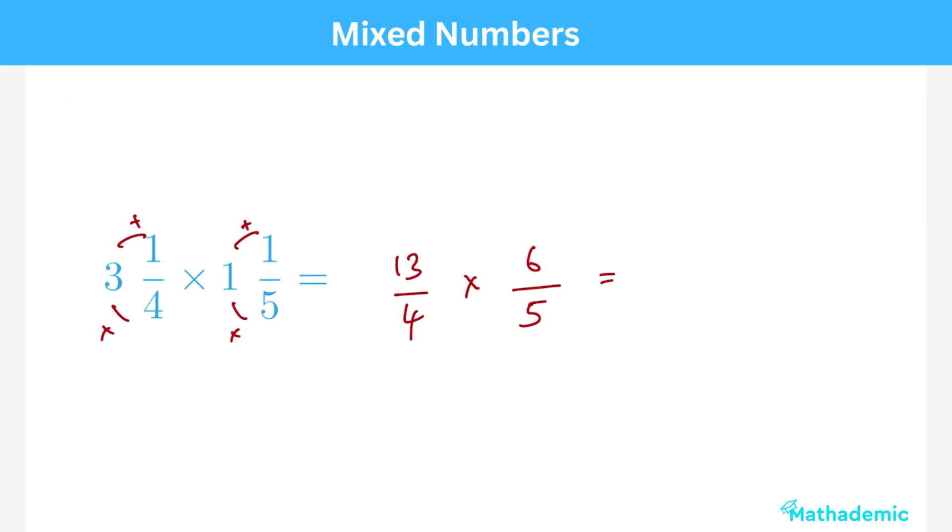Now we can do our normal strategy of multiplying across. We get 78 over 20. This simplifies to 39 over 10 when we divide both top and bottom by 2.